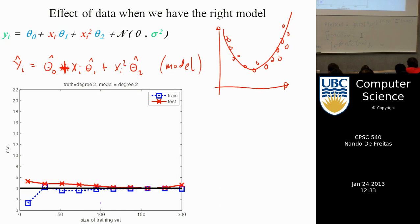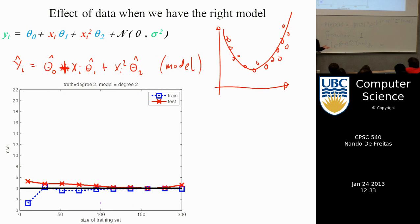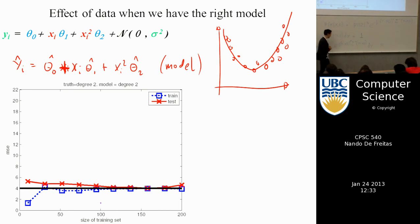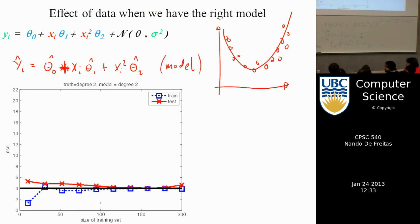We know that this is the probability of y, assuming that x and theta are given — that's what the bar means. We know that a probability sums to 1, so the integral of y of the probability must equal 1. Given that, what is the integral of this exponential function? The answer is 2 pi sigma squared to the one-half.